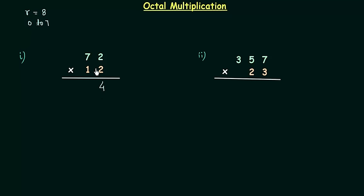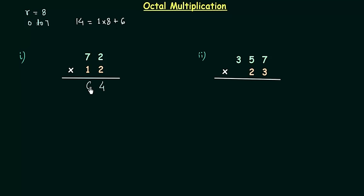2 multiplied by 7 is 14. 14 is not an octal number, so we have to break it like we did in octal addition: 1 multiplied by 8 plus 6. 1 multiplied by 8 is 8, and 8 plus 6 is 14. So 6 will come here and 1 will go as carry, and finally we have 1 6 4.